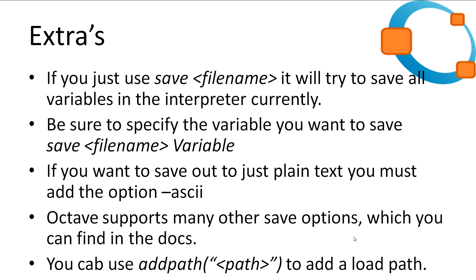Finally, a few extras. It's important to note that when you use the save function and you do not specify a variable to save, Octave will save all of the user created variables in the Octave session, to that file. If you want to save out data to a text file, you can use the dash ascii option. There is other save options like binary and MATLAB versions, which you can find in the Octave docs.